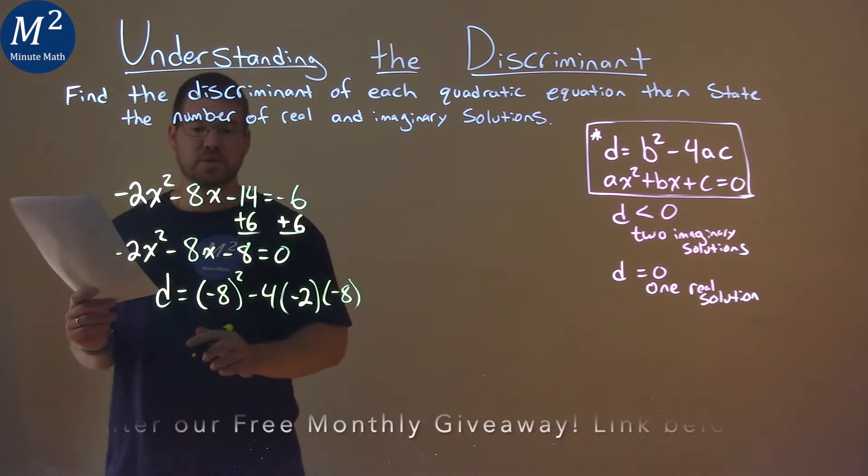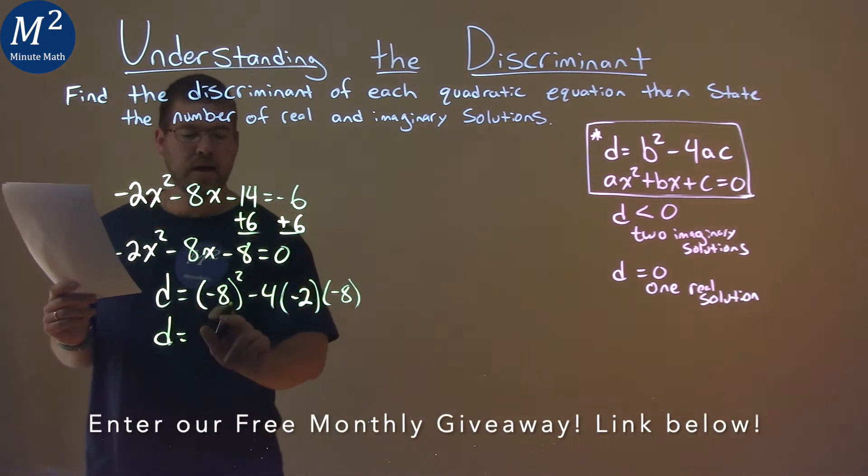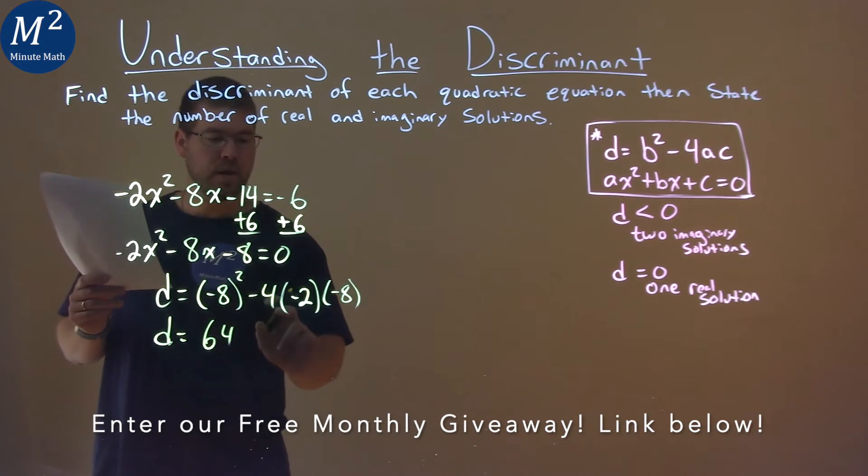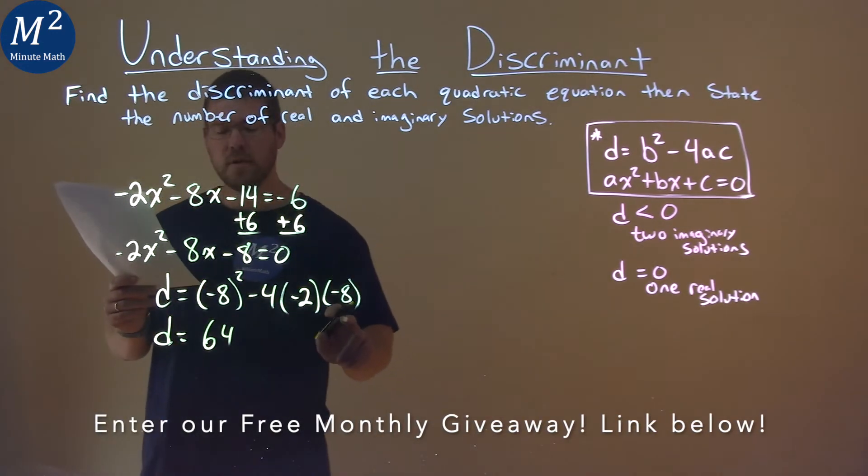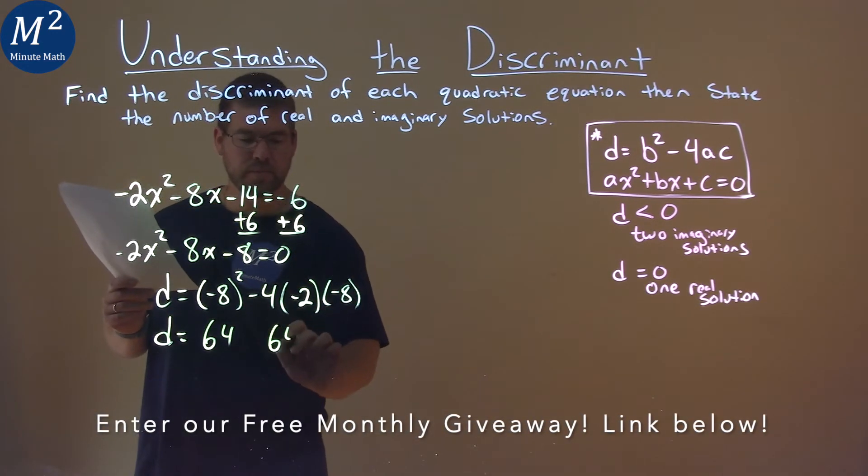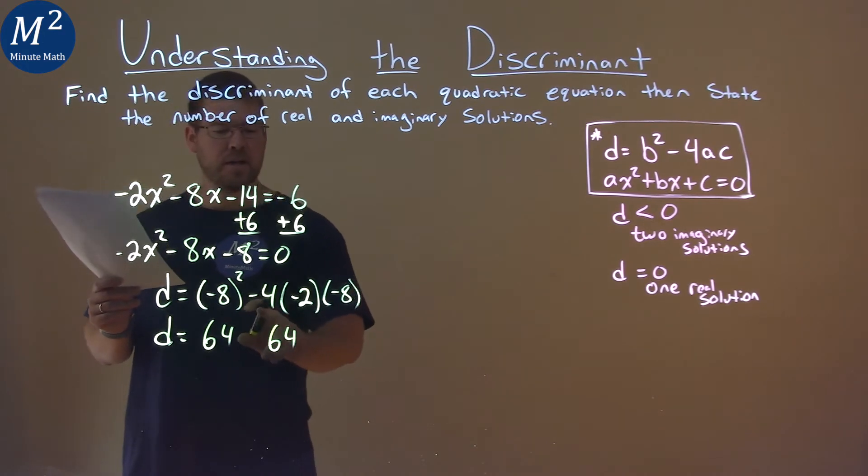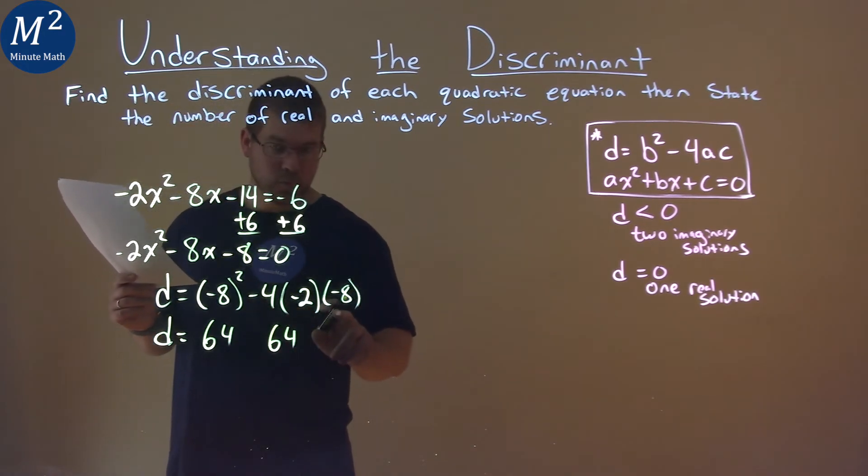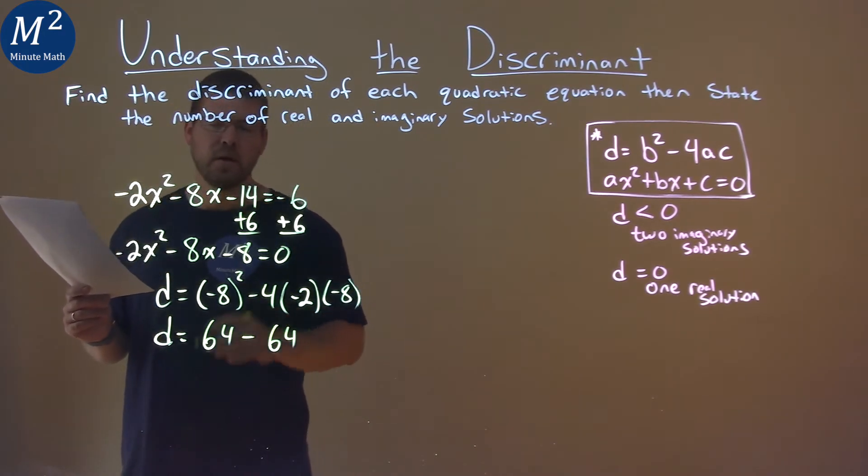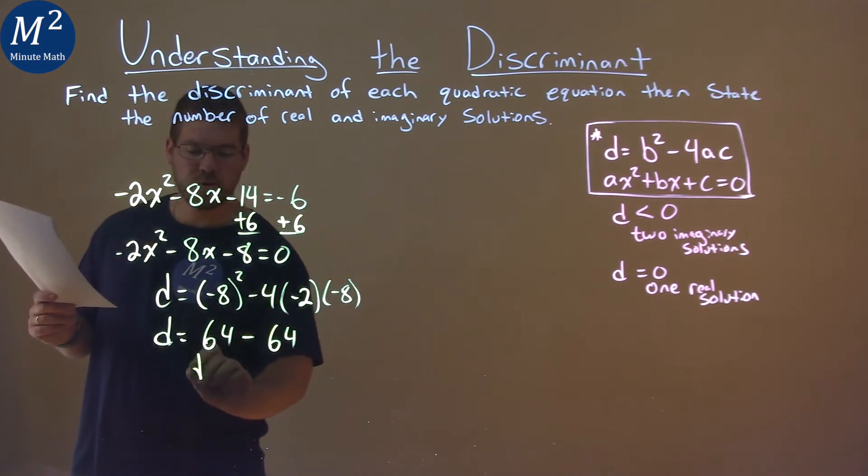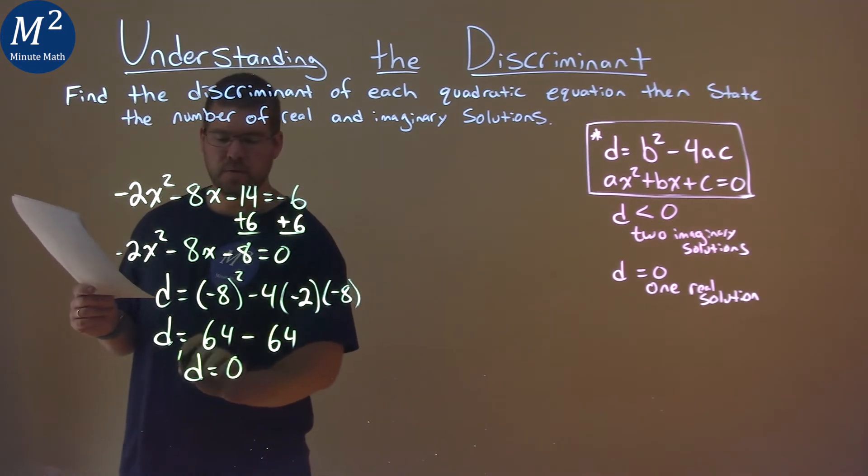Now from here we're solving. Negative 8 squared is a positive 64 and 4 times 2 times 8 is also 64. Then we have a negative times a negative times a negative, which is a negative. So we have 64 minus 64 and 64 minus 64 is 0.